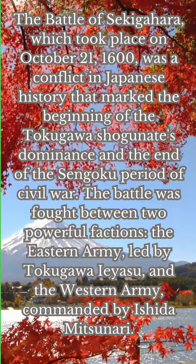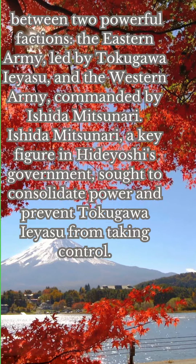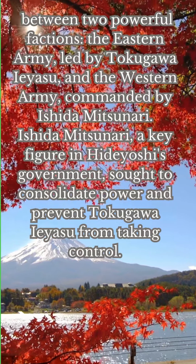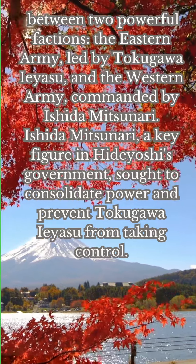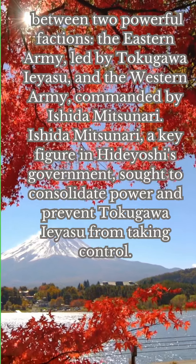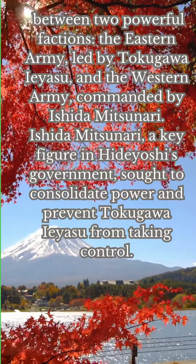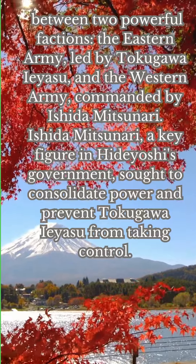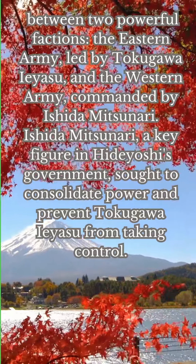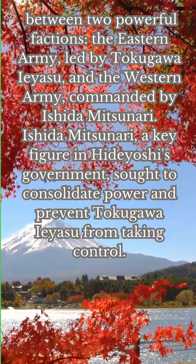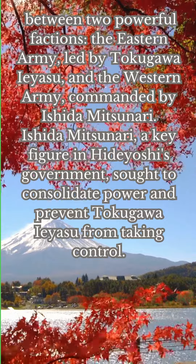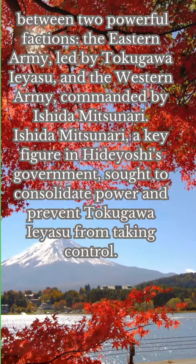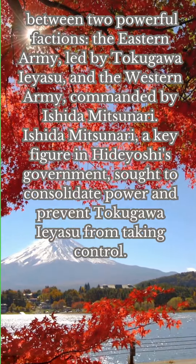The battle was fought between two powerful factions: the Eastern Army, led by Tokugawa Aesu, and the Western Army, commanded by Ishida Mitsunara. Ishida Mitsunara, a key figure in Hideyoshi's government, sought to consolidate power and prevent Tokugawa Aesu from taking control.